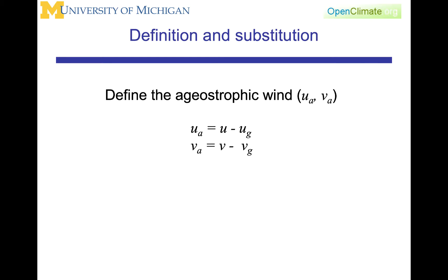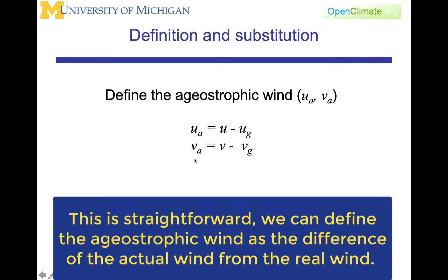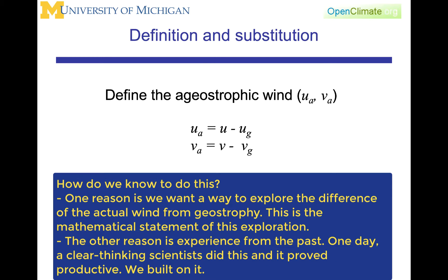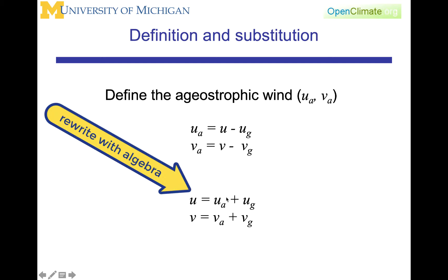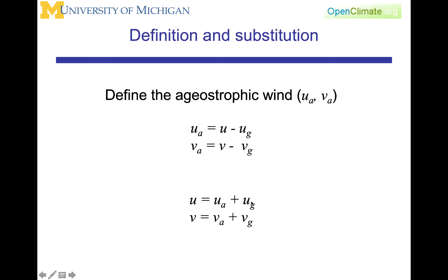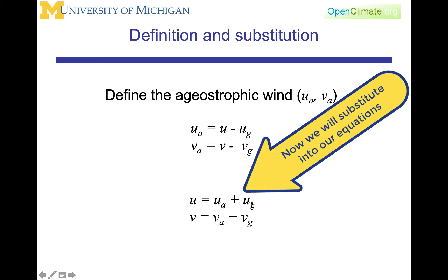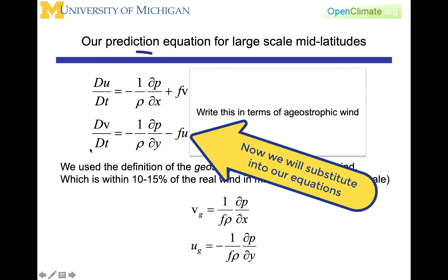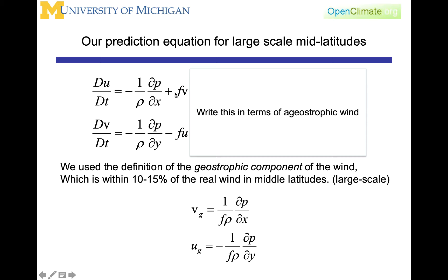We now define the ageostrophic wind as the difference between the true wind and the geostrophic wind — simply a definition we adopt because experience shows the ageostrophic wind is relatively small, making it a good way to gain insight into deviations from the geostrophic background. We rewrite u and v each as an ageostrophic part plus a geostrophic part, and substitute this into our prognostic equations.